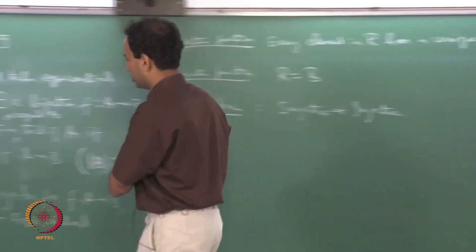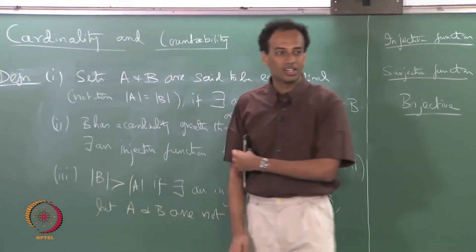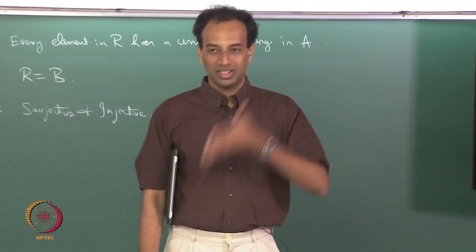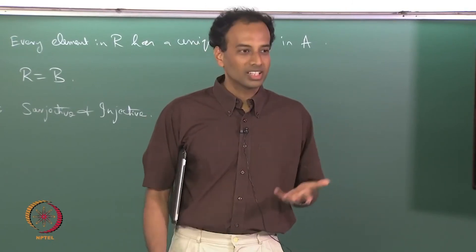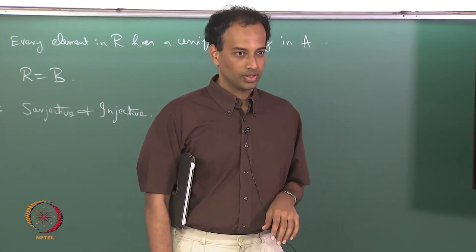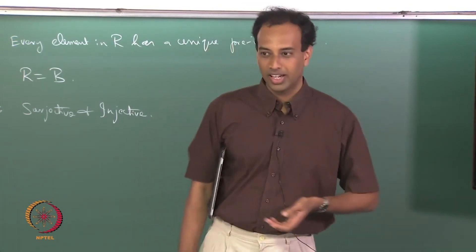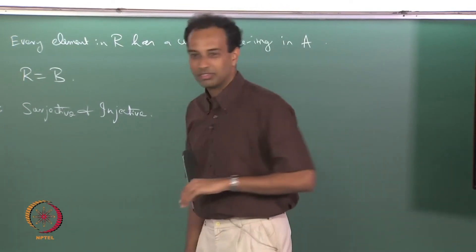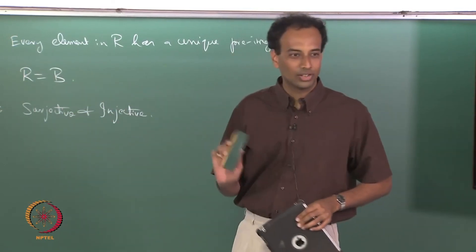We can see examples of infinite sets where one infinity is strictly bigger than another. For instance, both natural numbers and real numbers are infinite sets, but the infinity of the real numbers is actually a bigger infinity than the infinity of natural numbers, and there are sets which are even bigger infinities than real numbers. This is a little hard to digest at first, but once you have these definitions clear, it is fairly easy to understand.